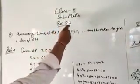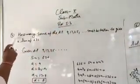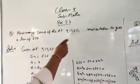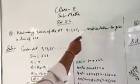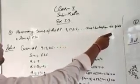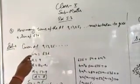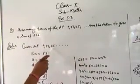Class 10 subject mathematics exercise 5.3 Question number 4: How many terms of the AP 9, 17, 25, dot dot dot must be taken to give a sum of 636? Solution: Given AP 9, 17, 25, dot dot dot, SN equal to 636.